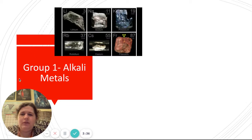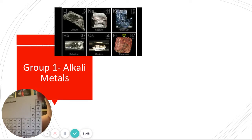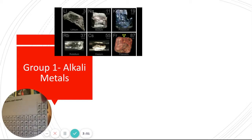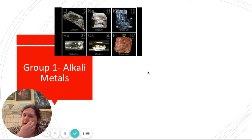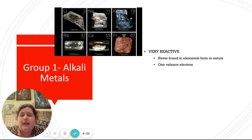The alkali metals are the first group on the periodic table — column one. Hydrogen is not included with the alkali metals; hydrogen is actually a non-metal. The alkali metals are lithium, sodium, potassium, rubidium, cesium, and francium. They are very reactive and never found in their elemental form — only ever found in compound form. The reason they're so reactive is because they only have one valence electron, and they will do literally anything to get rid of that one valence electron. That electron is easily lost, and it forms a plus-one cation.